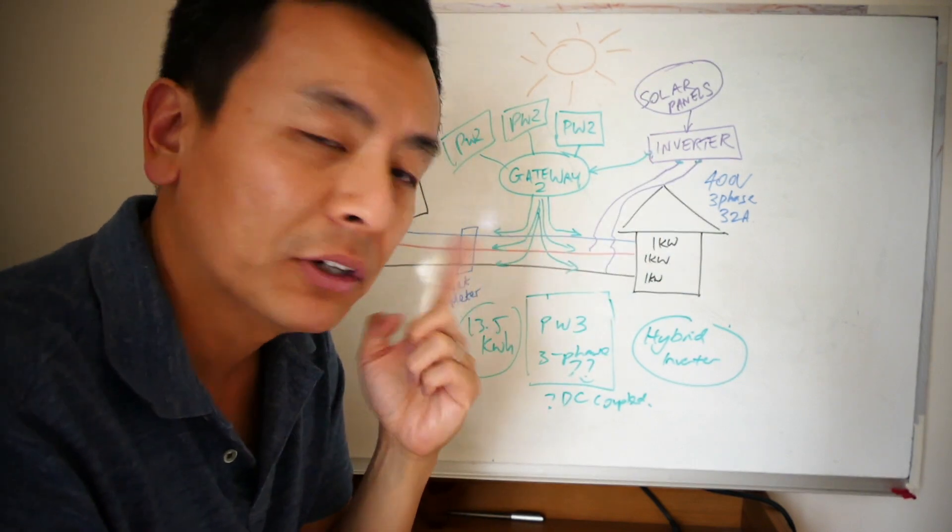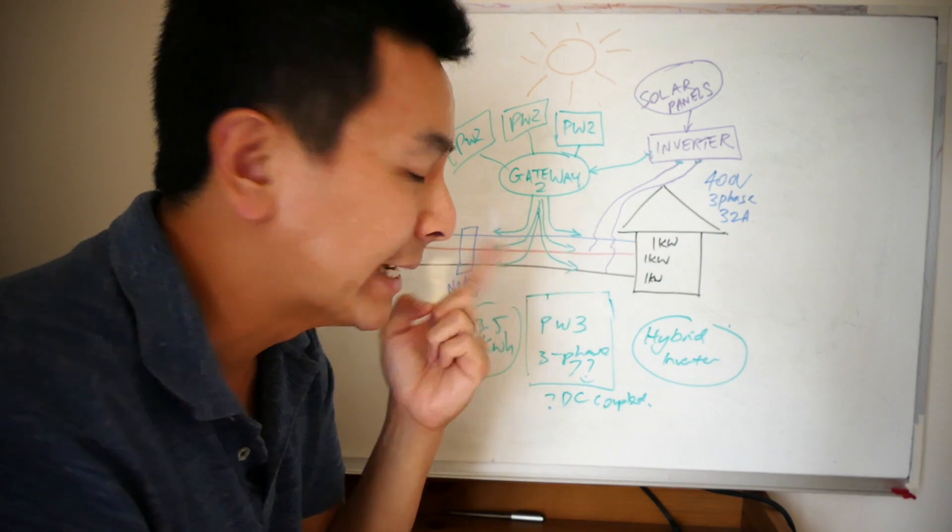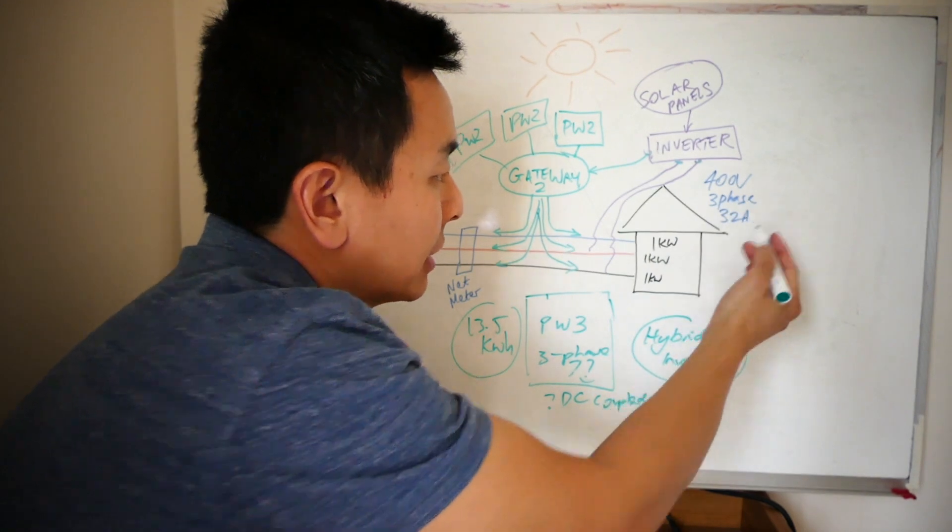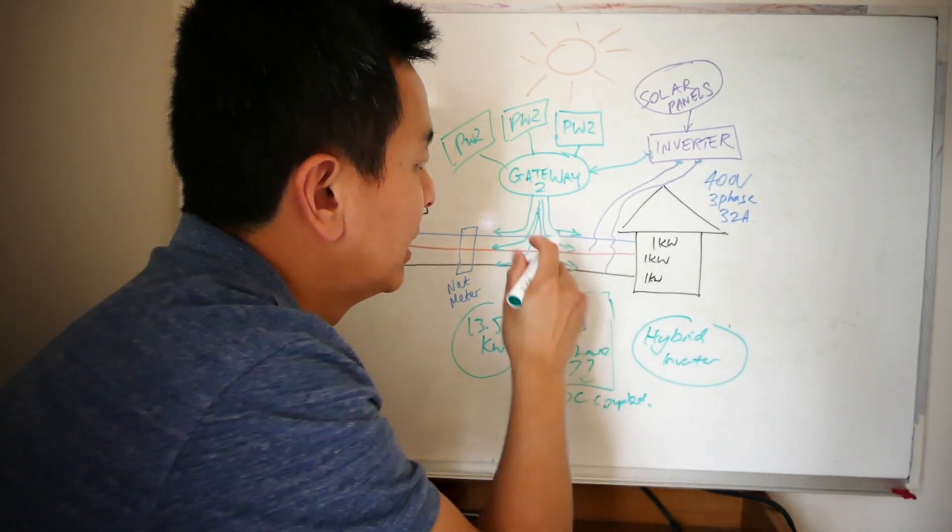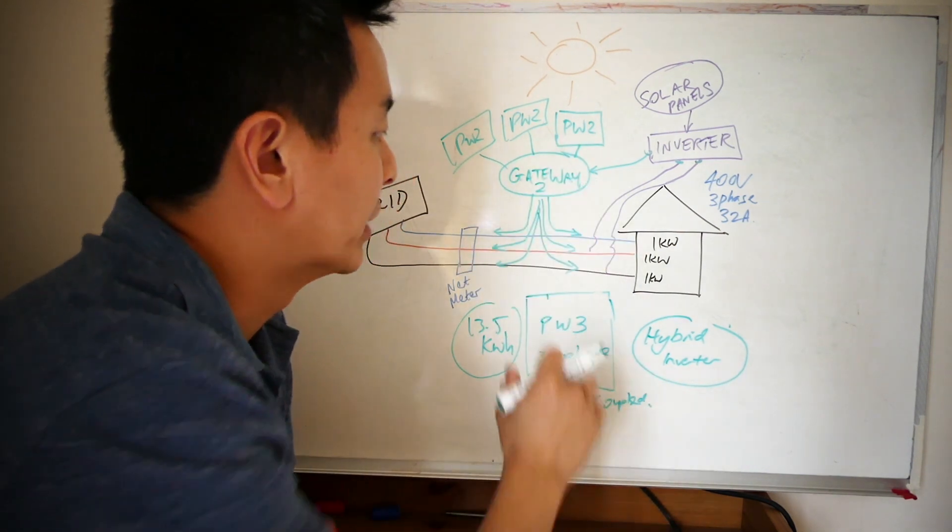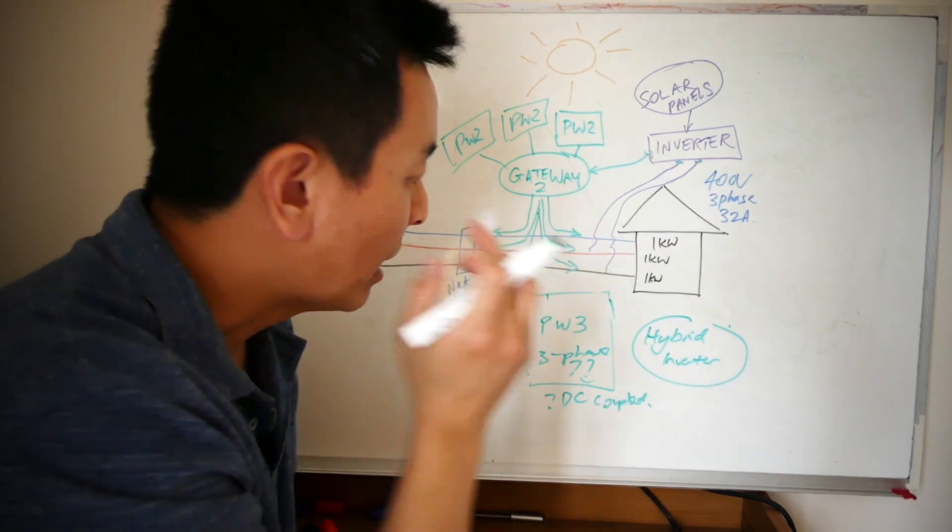And you know, I think it's even impossible to supply an air conditioning system, even if it's on grid, because if you've got a three-phase fully ducted air conditioning at 400 volts, even if you've got three Powerwall 2s doing an on-grid situation, it cannot supply that.